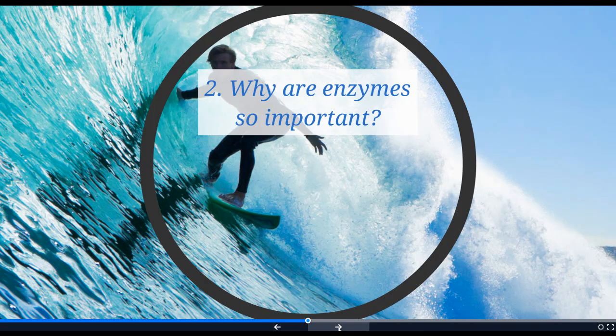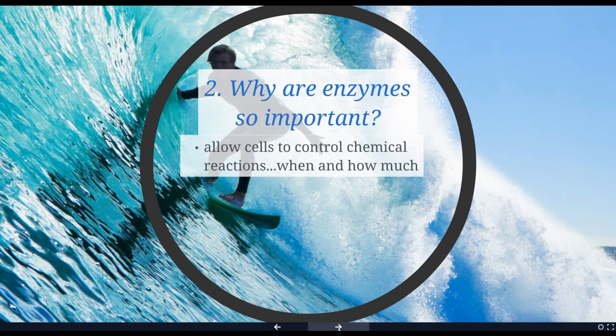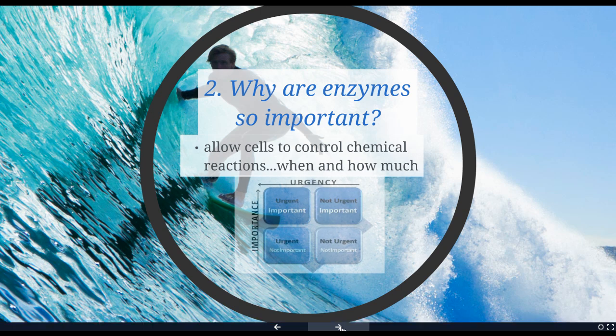Enzymes are important to all living things because they allow cells to control chemical reactions — determining exactly when reactions happen and how much of a particular product is produced. This allows cells to maintain homeostasis. We've got lots of fats and carbohydrates, so we can break them down and store them for later, or break down our stores when there's no incoming food. Enzymes are key in all of those processes.